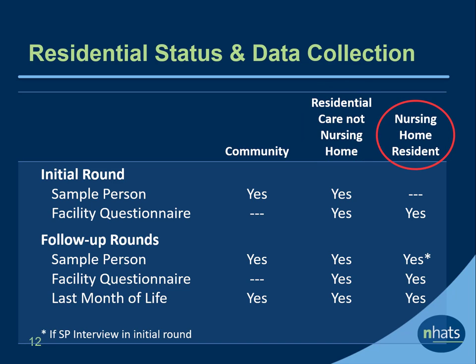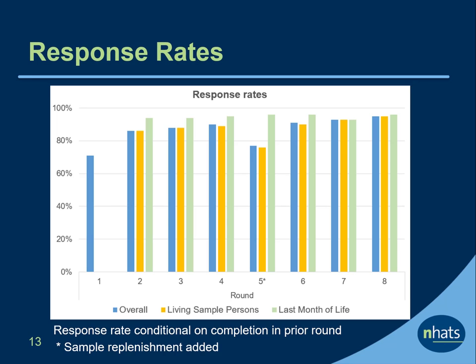Sample persons living in a nursing home in their initial round do not complete a sample person interview and are not eligible for a sample person interview in follow-up rounds. They are, however, eligible for the last month of life interview and a facilities questionnaire interview which is conducted at each round. The unweighted response rate is 71% for round one, the initial round, and 77% in round five, the replenishment year. Conditional response rates for other rounds range from 86% to 95%. Response rates are similar for living sample persons and last month of life interviews. For more recent waves, response rates are available in the NHATS User's Guide.